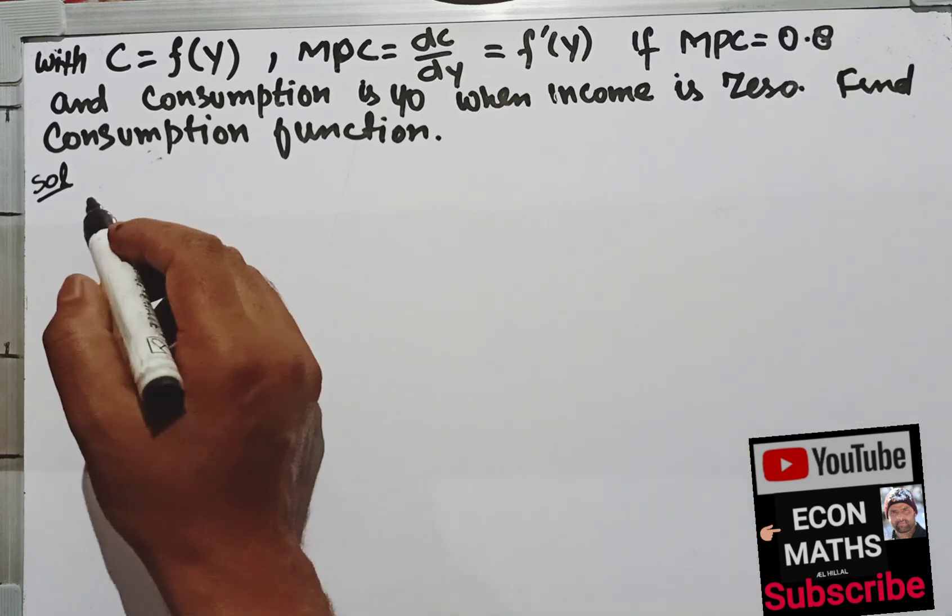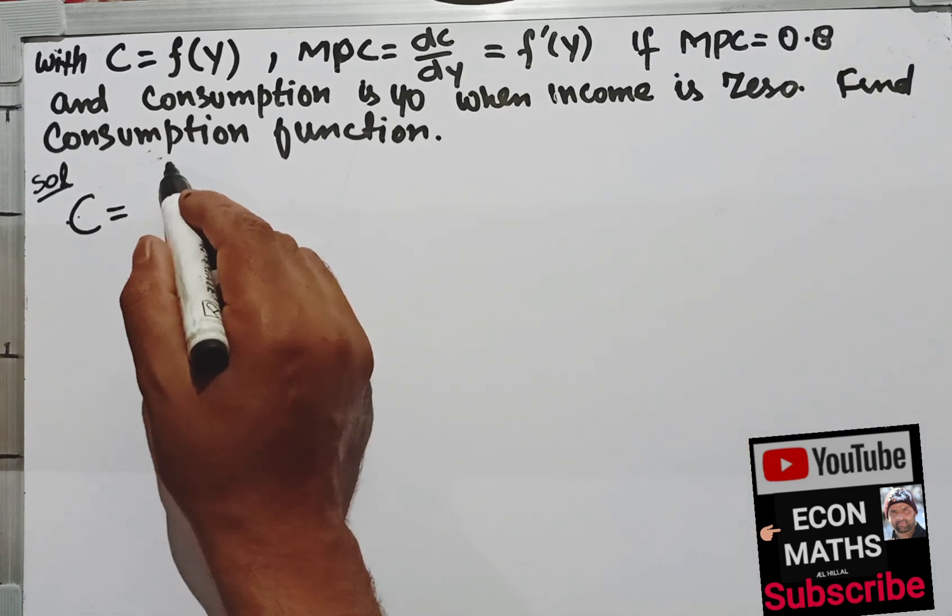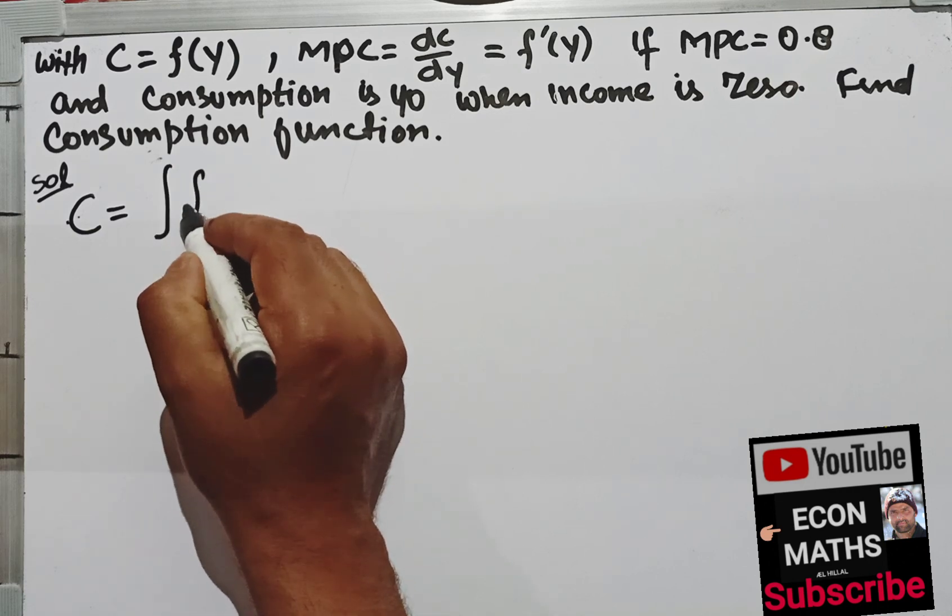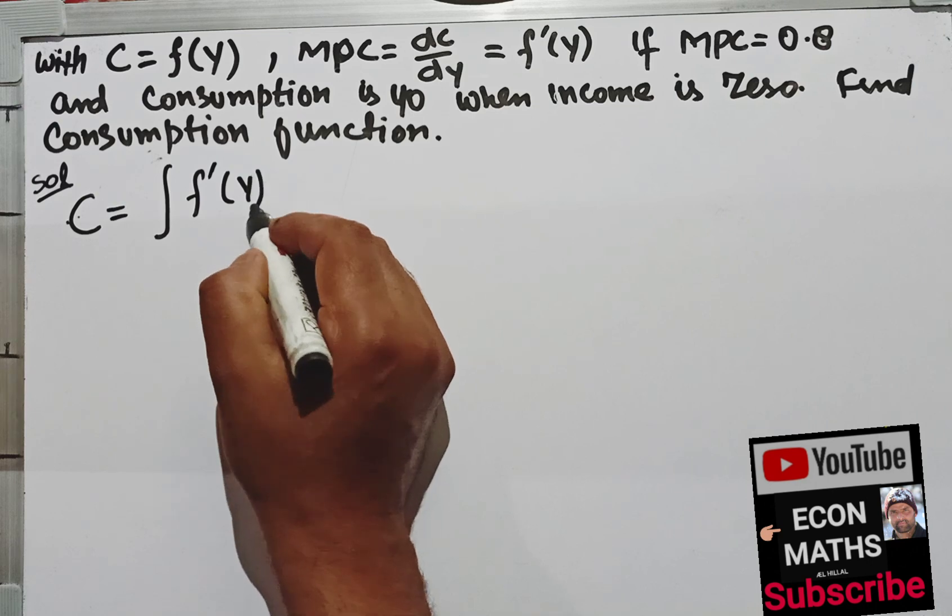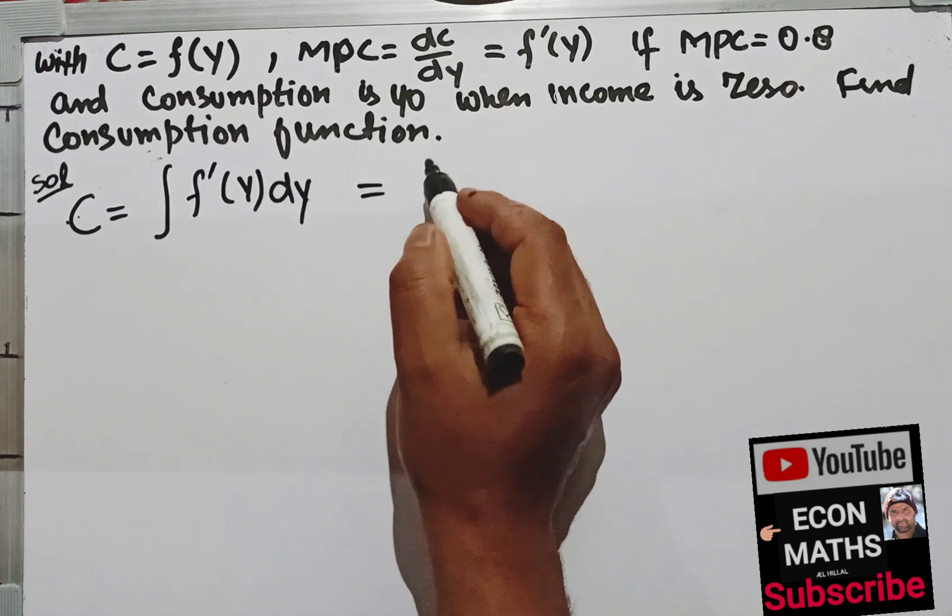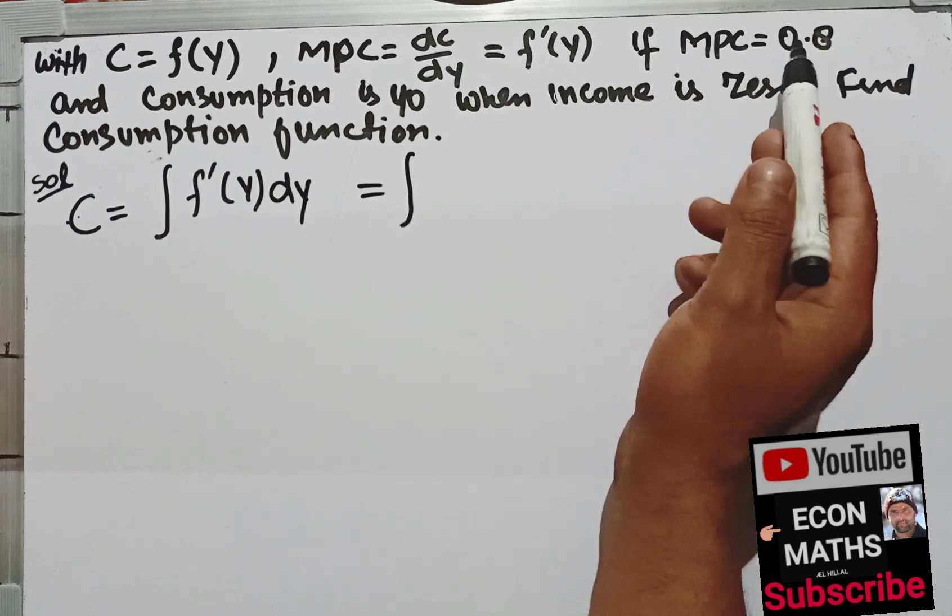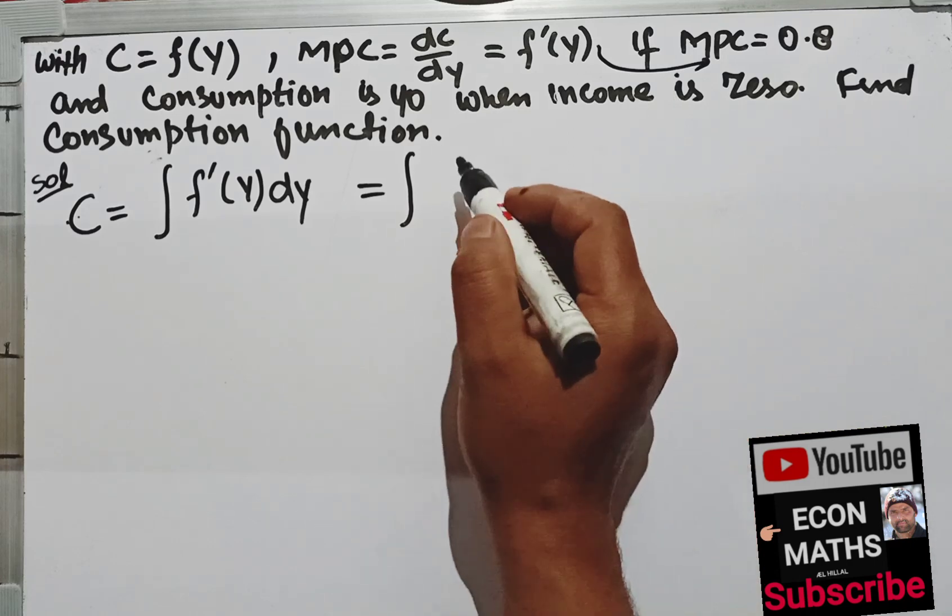Therefore, consumption is equal to the integration of f dash y dy, that is equal to... now f dash y is given as 0.8 because this is the MPC, so I will write 0.8 dy.